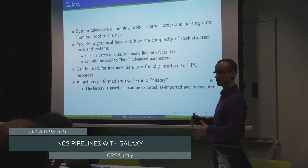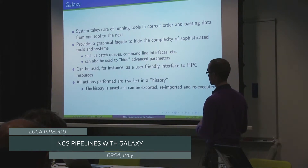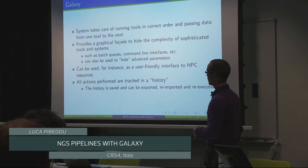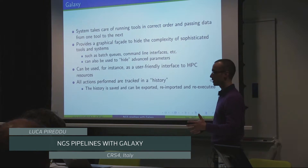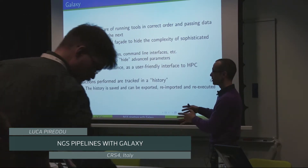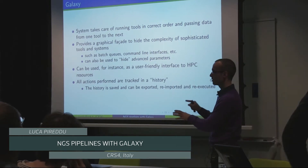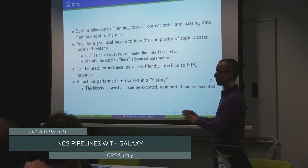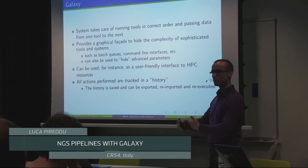We also use Galaxy because it provides a graphical facade in front of the complexities of running these things, in the sense that you can hide the cluster behind it - you can configure it so that the operations it needs to run automatically get submitted to the batch queue system. You can also use it to hide advanced parameters. For instance, if you have a workflow with advanced parameters but want to hand it off to the biology lab, you can make a custom tool: when the sample's ready, click this button and it'll fire off a workflow for them.